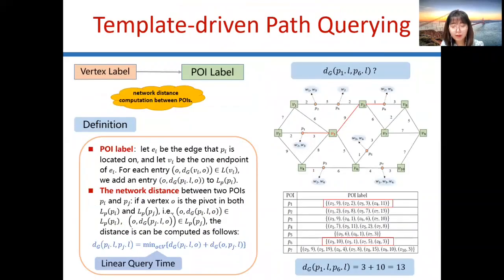For template-driven path query, to compute the network distance between POIs, we construct the hybrid label index. Let EI be the edge that PI is located on, and VI be the endpoint of EI. The POI label is built according to the two-hop label of the matching edge endpoints, and network distance between two POIs is computed through the common pivot in the POI labels. For example, the network distance between P1 and P6 is computed through pivot V3.